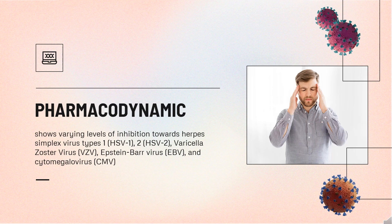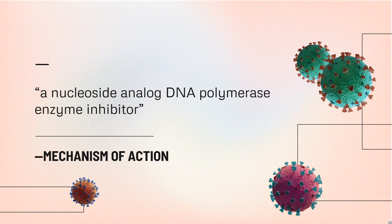Pharmacodynamics. Valacyclovir shows varying levels of inhibition towards herpes simplex virus types 1 (HSV-1) and 2 (HSV-2), varicella zoster virus (VZV), Epstein-Barr virus (EBV), and cytomegalovirus (CMV). The quantitative relationship between the cell culture susceptibility of herpes viruses to antivirals and the clinical response of humans to the same antiviral therapy has not yet been elucidated. Sensitivity testing results, described by the EC50 — the concentration of drug needed to inhibit viral growth by 50% in cell culture — vary widely depending on various factors.